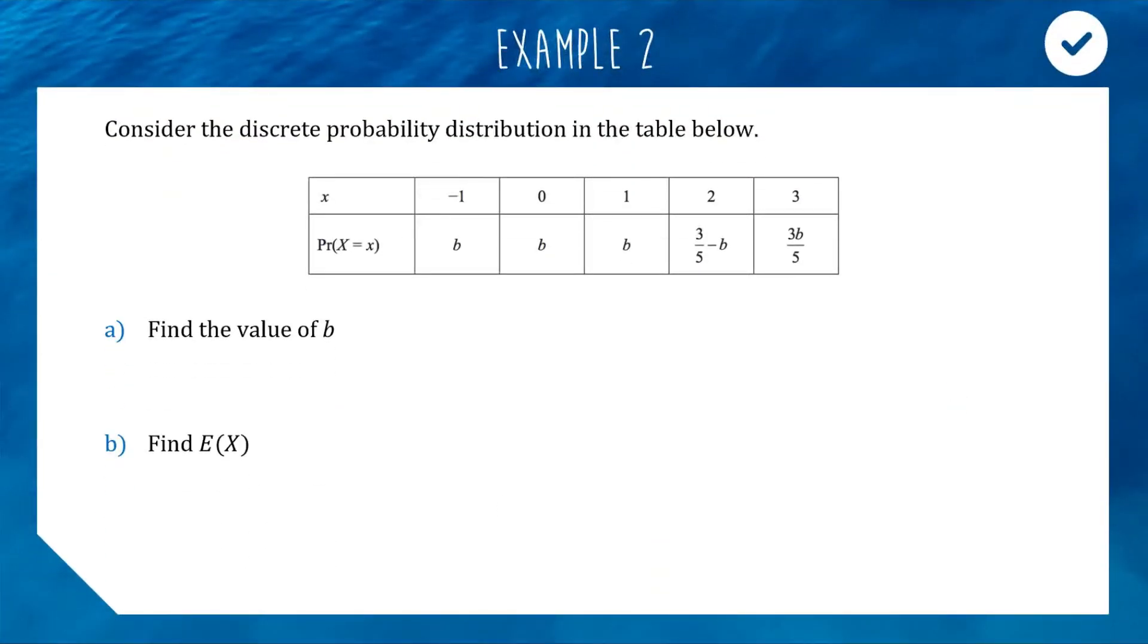Let's have another go using this formula. Here we have a discrete probability function in the table below. We have our outcomes across the top, and our probabilities are all left in terms of b. Part A is to find the value of b, similar to what we were doing in the last video.